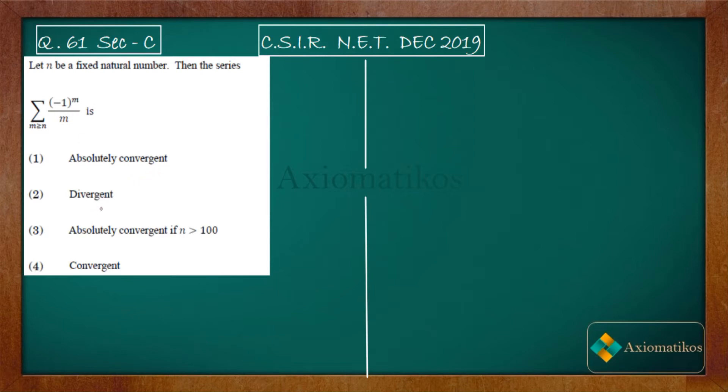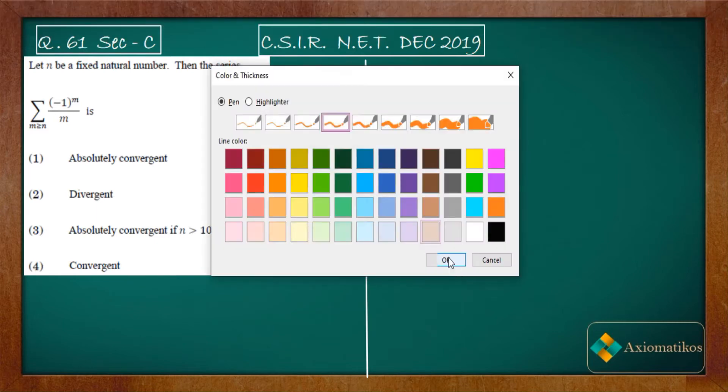Divergence and convergence. So what we have to do is find out whether it will converge or not. Please focus on this: n is a fixed natural number from where the series is starting. Now let us begin.